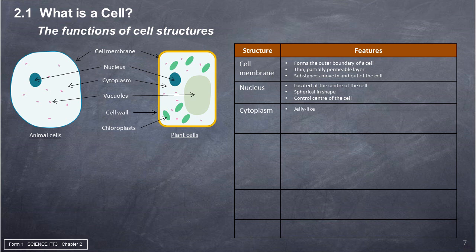Cytoplasm: a jelly-like medium that contains water and many other substances such as protein, starch, minerals, and vitamins. It is enclosed by the cell membrane, and chemical reactions take place here.